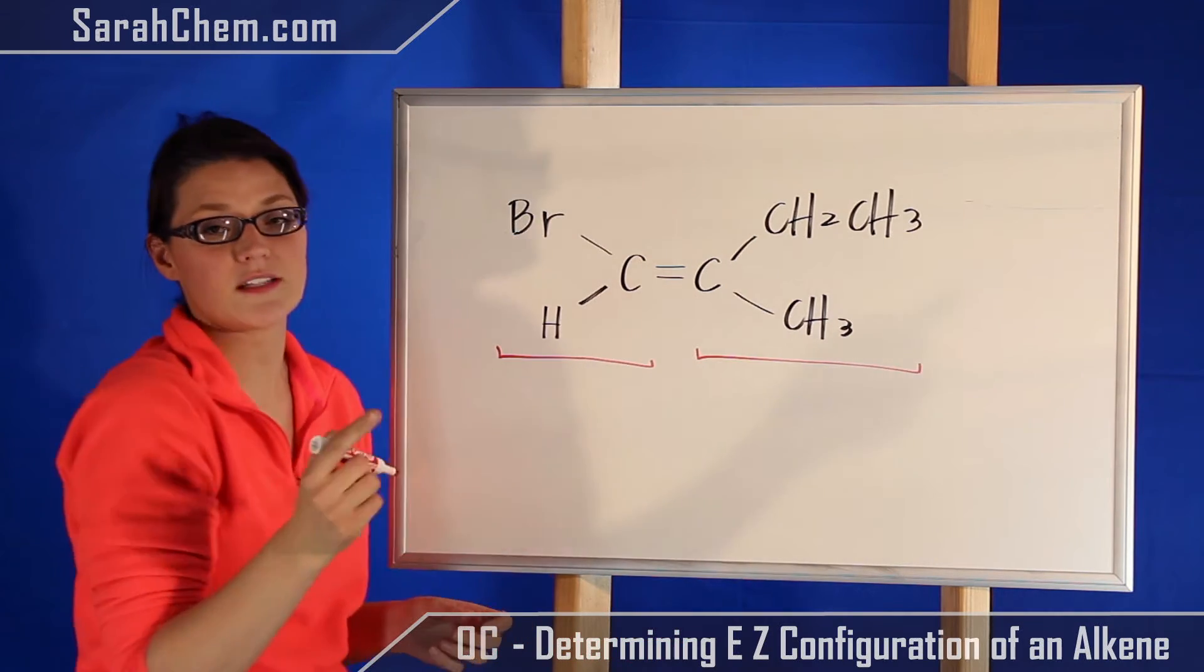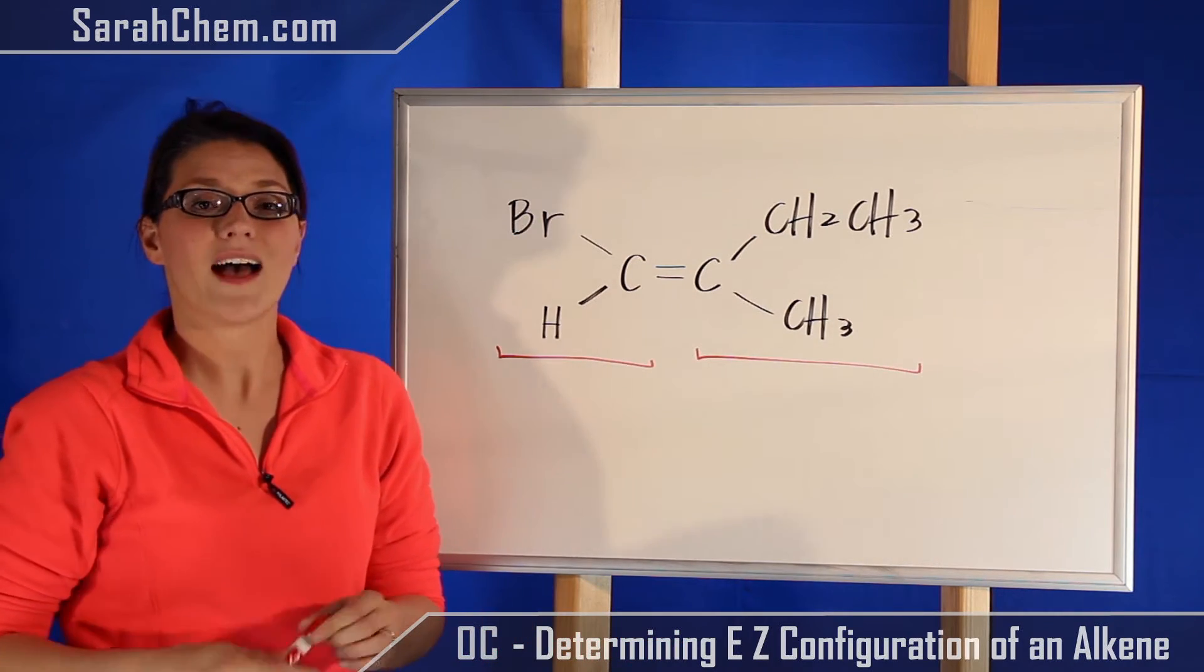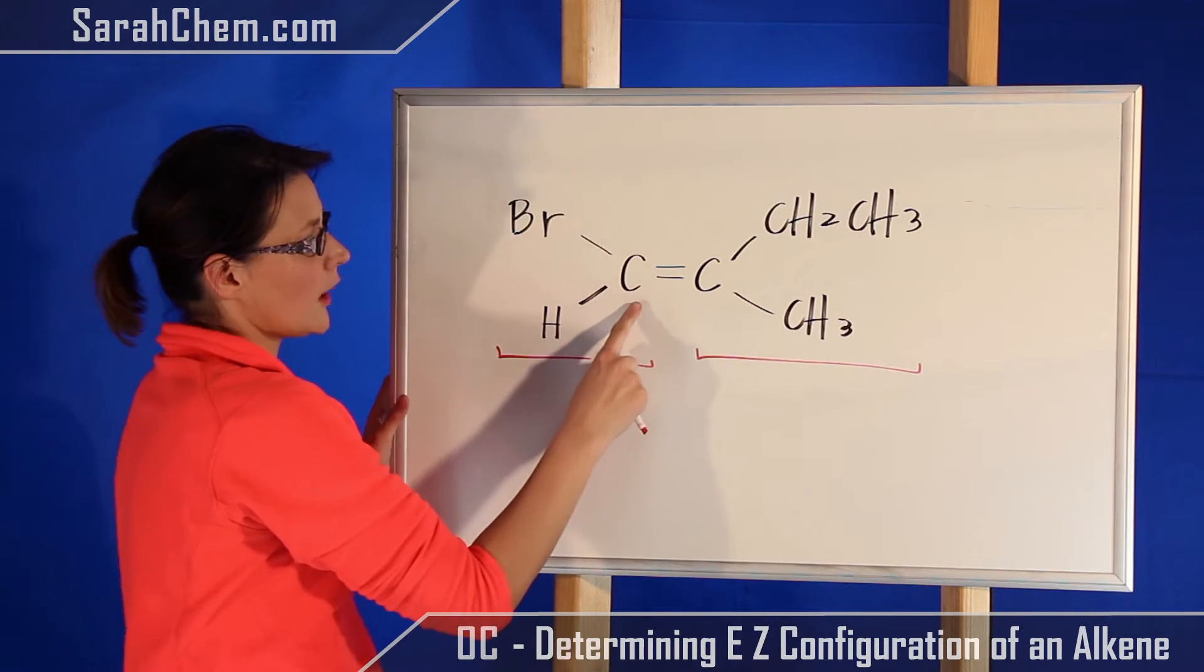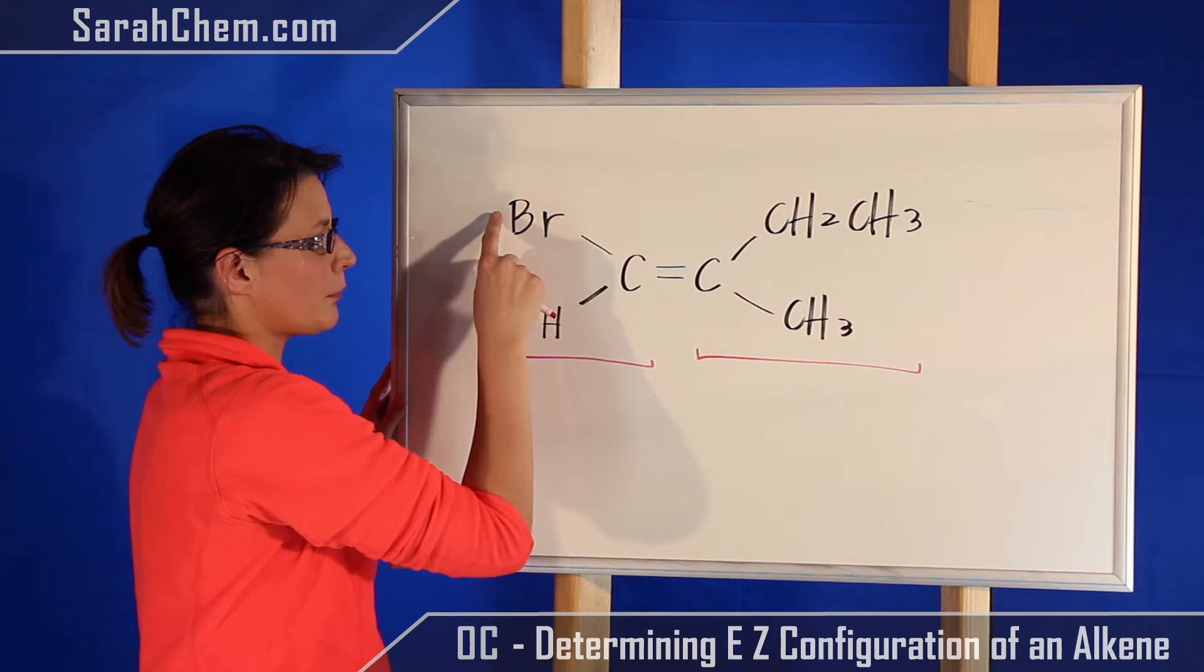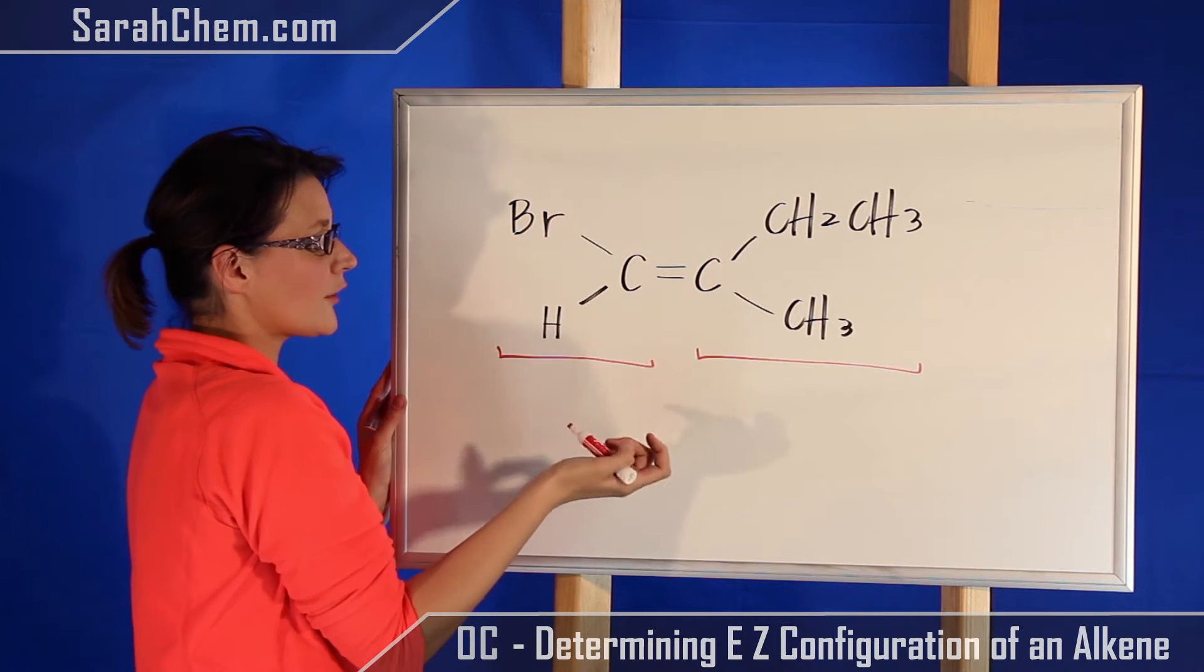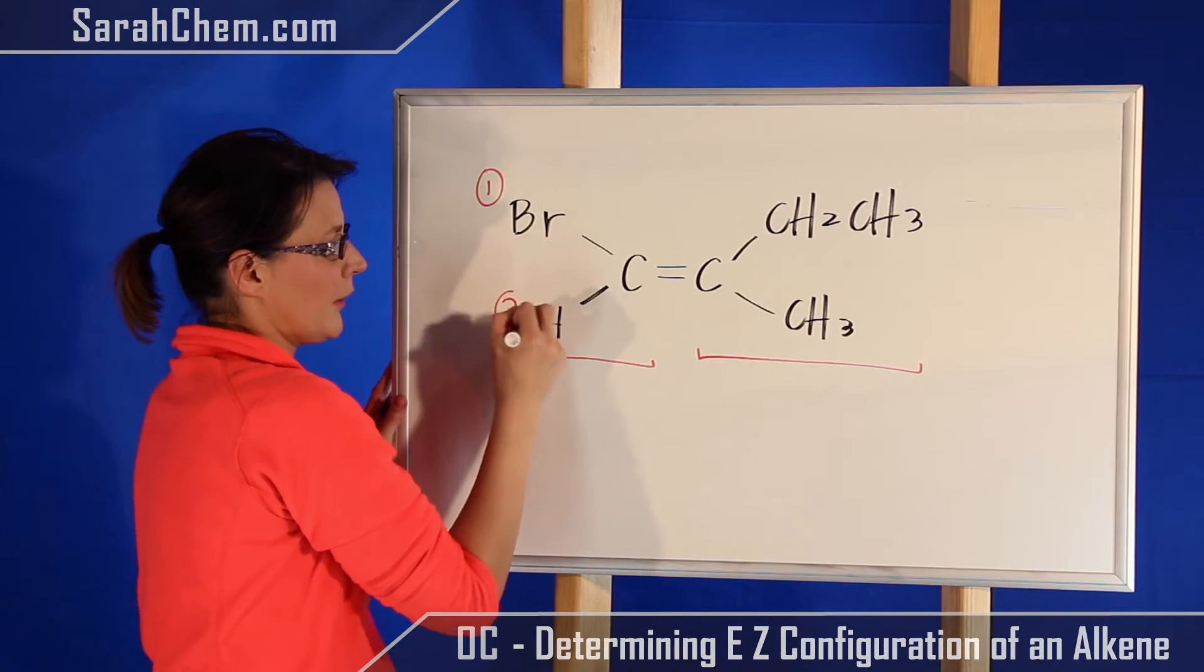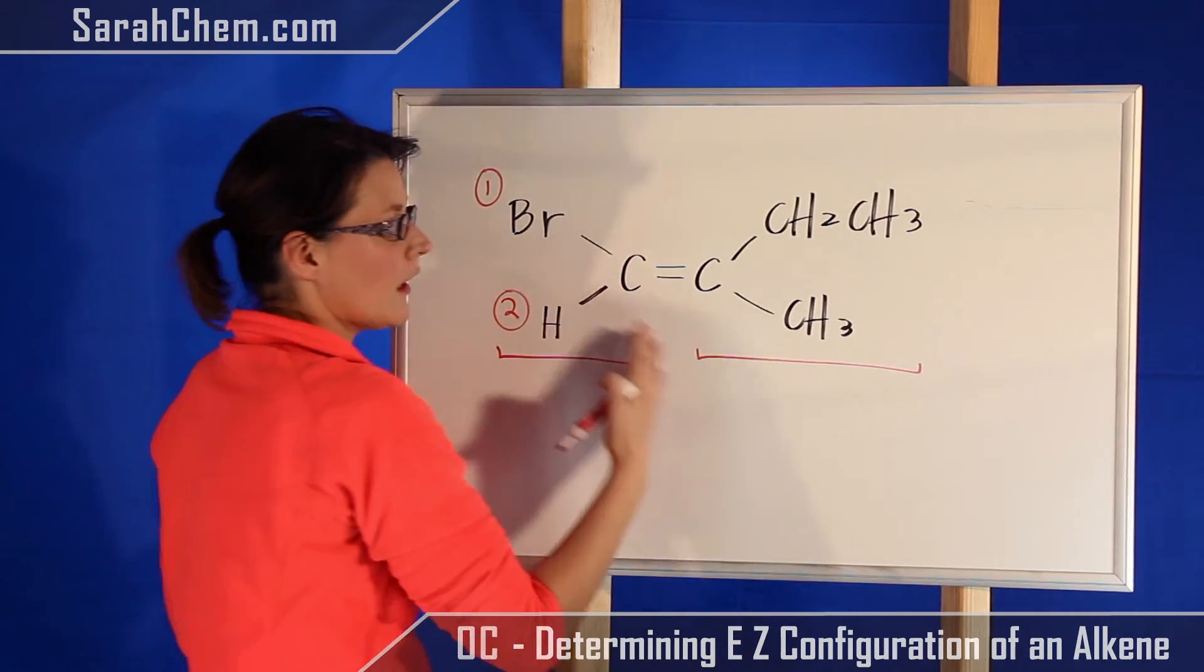So if I take a look at this carbon here, I'm comparing hydrogen to bromine. Bromine has a much higher atomic number than hydrogen, so this would be priority one and this here would be priority two. Now moving on, I take a